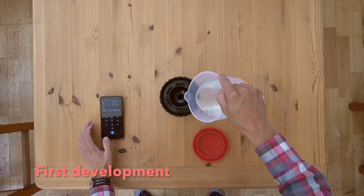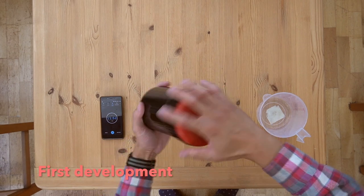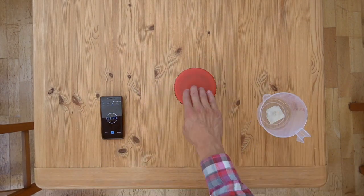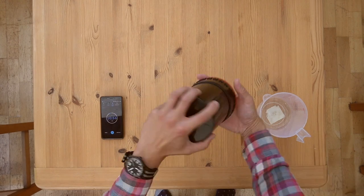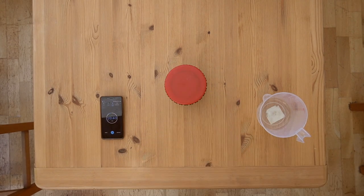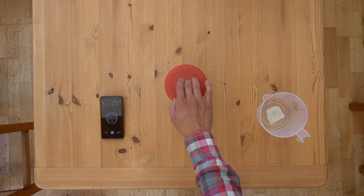For the first stage of development, we need to use the developer and develop for 12 minutes. I'd recommend agitating for the first 30 seconds and then 10 seconds every minute after.